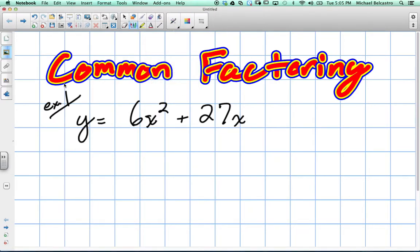Okay, so we're going to go over common factoring. What we have here is like a standard form of a quadratic. We want to factor it because factoring it will help us find x-intercepts. I'll kind of show you that idea.